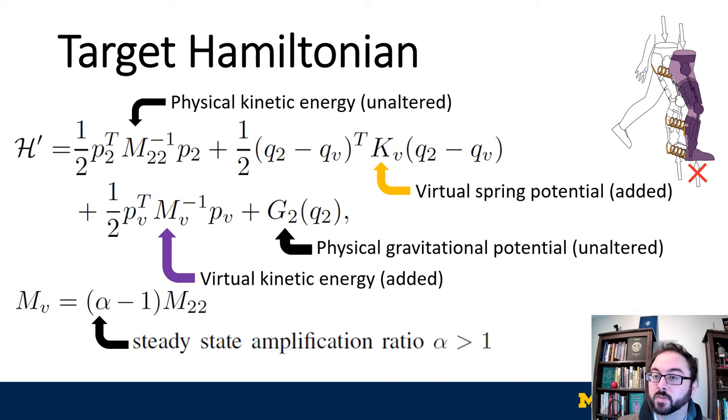The kinetic energy of the virtual leg, based on virtual leg mass matrix M sub V, and virtual leg momentum P sub V. And the gravitational potential energy of the real leg, G sub 2. The mass matrix for the virtual leg is defined as the quantity alpha minus 1 times the mass matrix for the real leg, with alpha a steady state amplification ratio greater than 1.